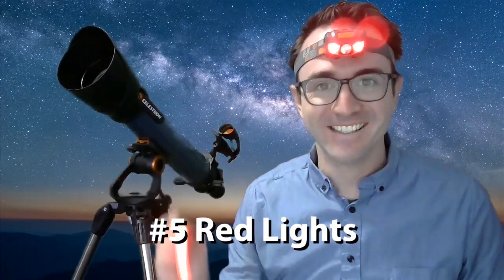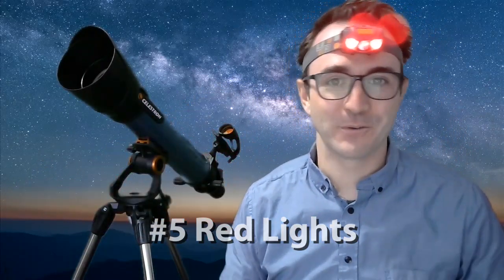Number five, lights. So whenever I stargaze, I use a variety of lights. My favorite is this red light headlamp. Now as many of you know, you don't want to use white light while stargazing. You also don't want to use a computer or a phone either. But obviously you need some light to operate your telescope and use your astronomy books that help you find your targets. Now any red light headlamp will do, and there's lots of those on Amazon for less than $20.